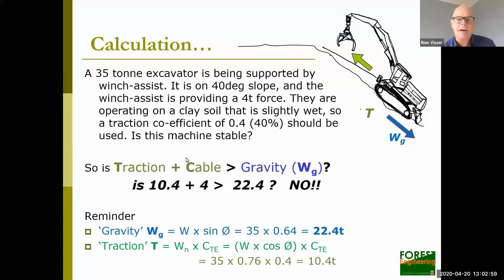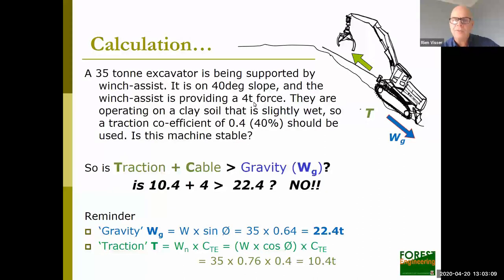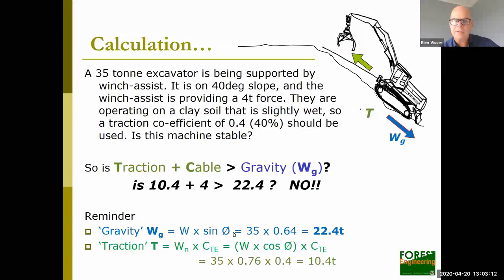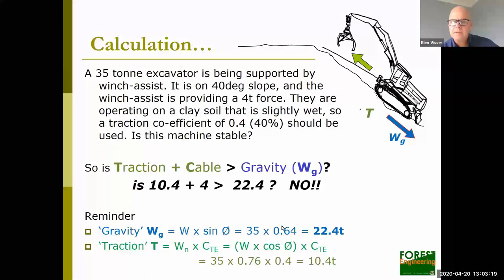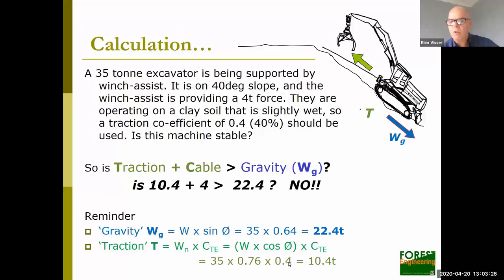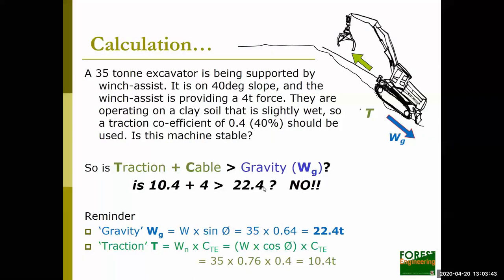Hopefully we have the same answers. At the end of technical Part One, we had a 35-ton excavator on a 40-degree slope with a 4-ton pulling force. Gravity comes out at 22.4 ton. For traction: 35 × 0.76 (normal force) × 0.4 (traction coefficient) = 10.4 ton. So with only 4 ton of tension in the cable, 14.4 ton is much less than 22 — the machine is going to slide.